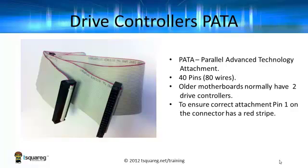To ensure the correct attachment — because you've got all these pins and you don't want to bend or damage anything — we've got a couple of things to help us. There's a red stripe along the cable and that indicates the location of pin one. And the connector itself is keyed, which means it can only go in one way. The PATA connector gave us a maximum of one gigabit per second — fast, but there's something faster.